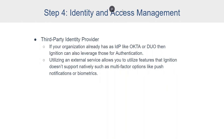That covers Ignition's built-in IDP with those different user sources. But what if your organization already has an IDP, like Okta or Duo? Well, Ignition can leverage those for authentication as well. Utilizing a third-party identity provider can be really useful because it lets you use features that Ignition doesn't support natively, such as multi-factor authentication from push notifications or biometrics. While IDPs were initially only available in Perspective, as of 8.1 they can be used throughout Ignition, including in the gateway, Vision, and the Designer.